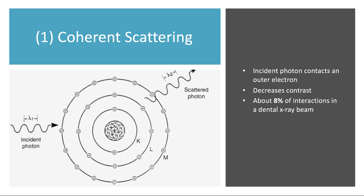Coherent scattering is the first type of interaction. This is where the incident photon contacts an outer shell electron and becomes a scattered photon. There's no ionization, no formation of an ion pair, and no energy loss. It's really only a change in direction of the photon coming in and getting bounced in a different direction due to contact with that electron.